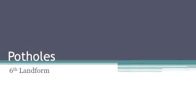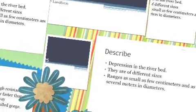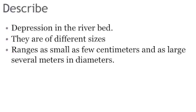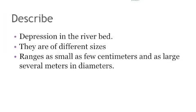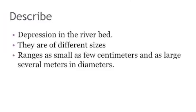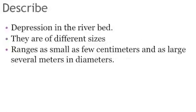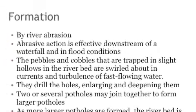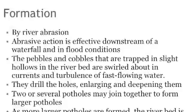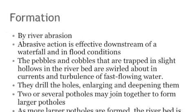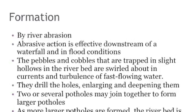Potholes — the sixth erosional landform. Description: it is a depression in the river bed. They are of different sizes, ranging from as small as a few centimeters to as large as several meters. Formation: by river abrasion. The abrasive action is most effective downstream of a waterfall and in flood conditions.